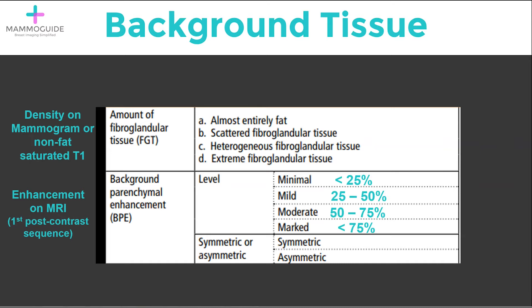Minimal, which is less than 25% enhancement. Mild, which is 25% to 50%. Moderate, which is 50% to 75%. And marked, which is greater than 75% of the breast parenchyma is enhancing.